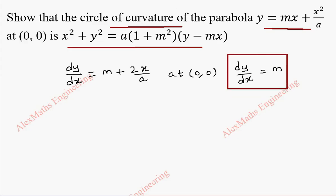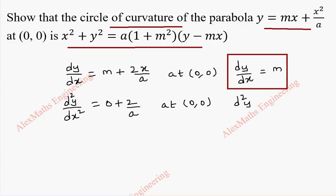Now again, we have to find its second differentiation, d squared y by dx squared. Differentiation of m is 0, and 2x differentiation is 2, and that divided by a, a constant. So again at (0, 0), there is no x and y to substitute. So we get d squared y by dx squared as 2 by a. So we got the second differentiation.